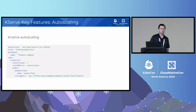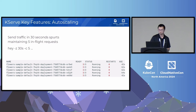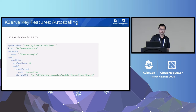KServe provides autoscaling via Knative. You configure the scaling target — for example, setting the target to one using concurrency as the scale metric. This autoscales model server pods based on traffic. If you send traffic in 30-second spurts while maintaining five in-flight requests, five model server pods will run because each only handles one concurrent request. You can also scale down to zero by specifying min replicas as zero.